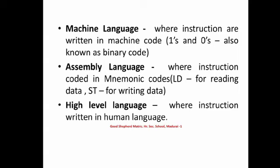In machine language, each instruction is coded using the numbers 1 and 0 — all instructions are coded as a sequence of 1s and 0s. In assembly language, instructions are coded using mnemonic codes. For example, to read data from the user, we use the instruction LD, which is a short form of 'load.' This is understandable only by the specific programmer.